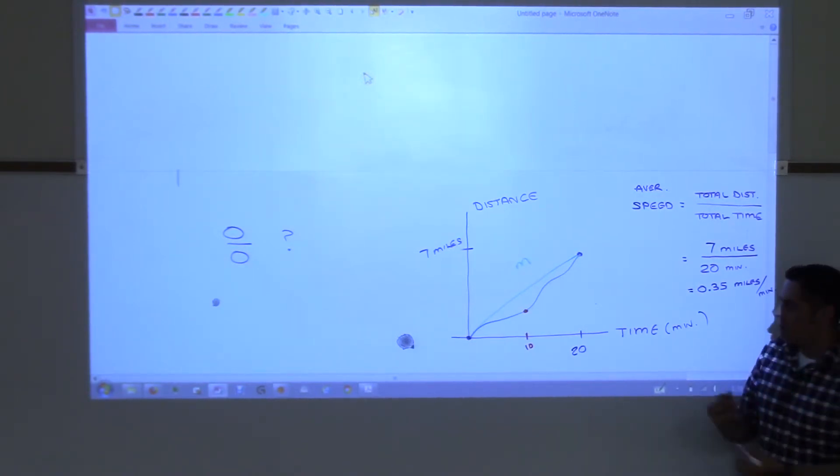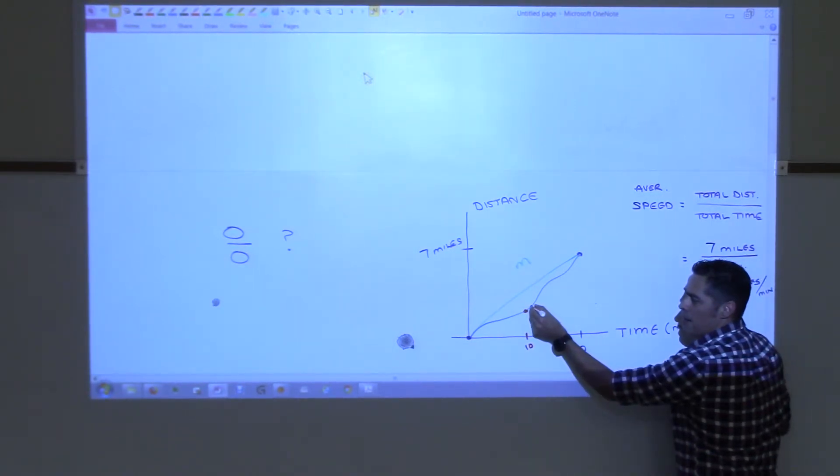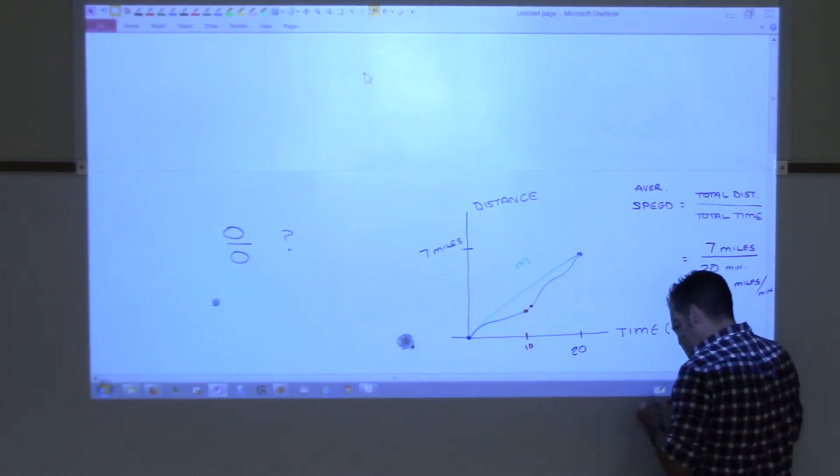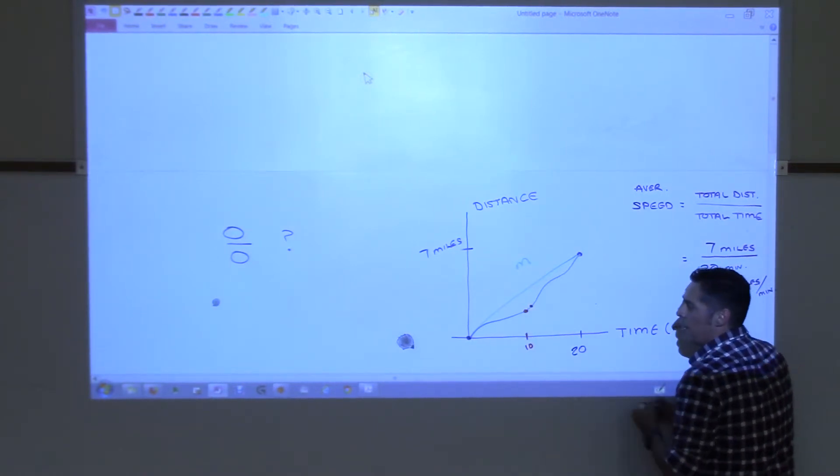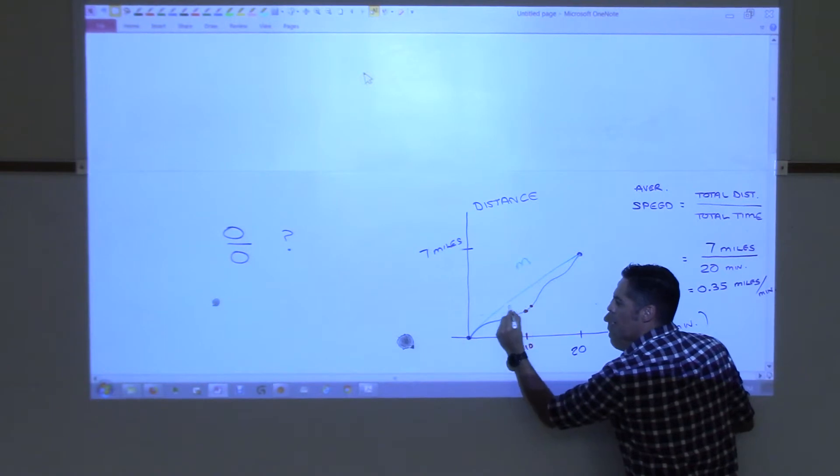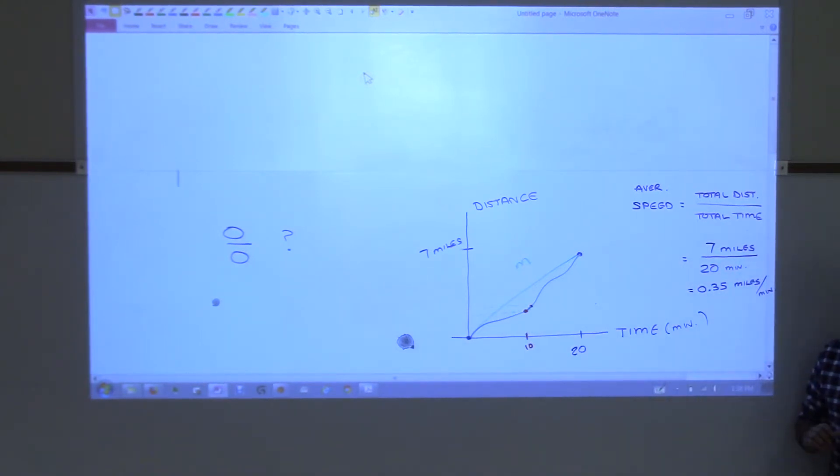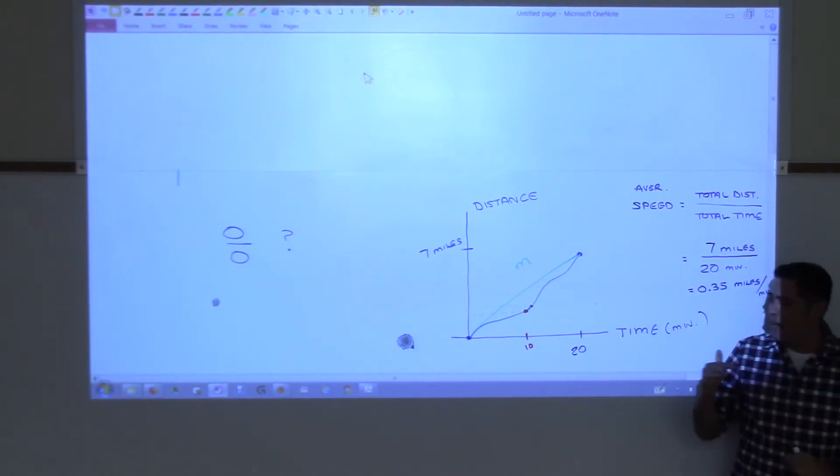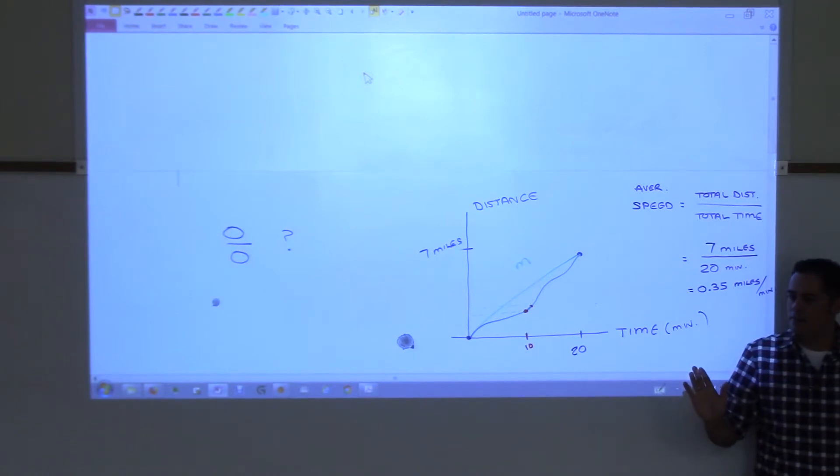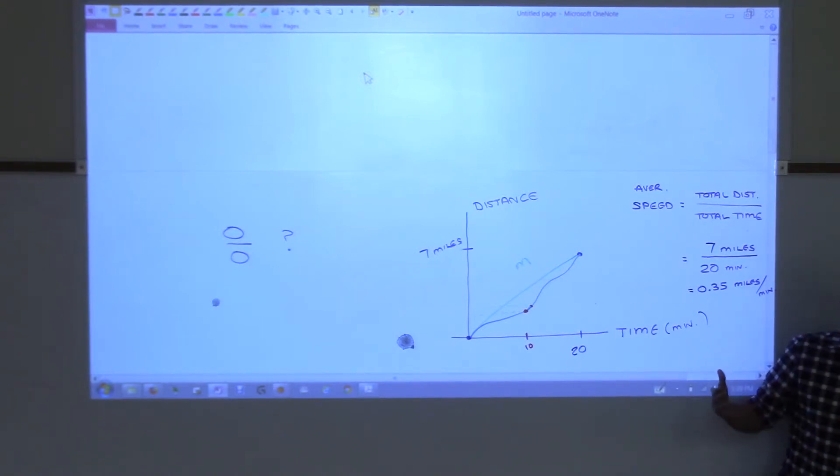Now, what you could do is if you picked another point right here next to it, really close, then if someone gave you the information, if you knew how high that was and you knew how high that was, then you could create a little green line right there, couldn't you? And that little line would give you an approximation of how fast you were going at that instant. But it would still be wrong, right? It would still be wrong because it would be an average. It wouldn't be an instant. Are you all following this?